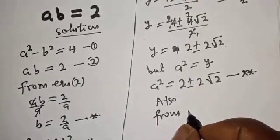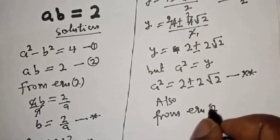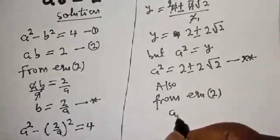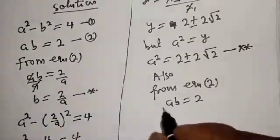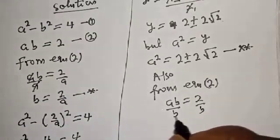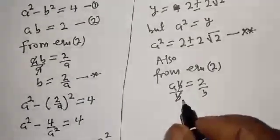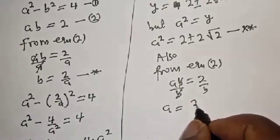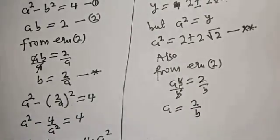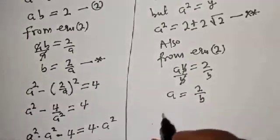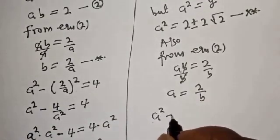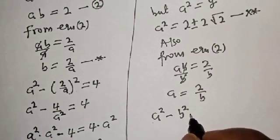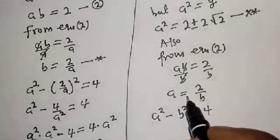Also, from equation 2, let's make a the subject of the formula. Dividing both sides by b gives a equals 2 over b. Now let's substitute for a in equation 1: a squared minus b squared equals 4, giving (2 over b) squared minus b squared equals 4.